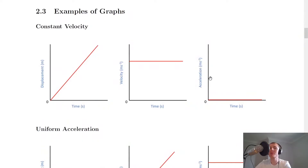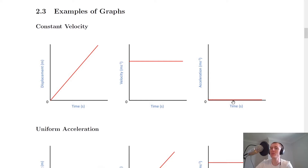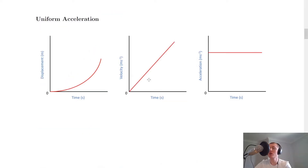We start by looking at the three types of graph for constant velocity. The velocity-time graph will have a straight horizontal line. Because the object has constant velocity it won't be accelerating, so the acceleration-time graph will simply be a line along zero. The displacement-time graph will be a straight line through the origin, because you're covering the same displacement in the same amount of time.